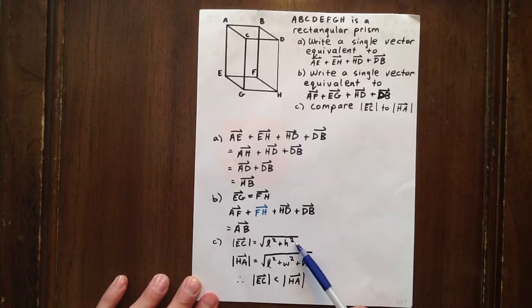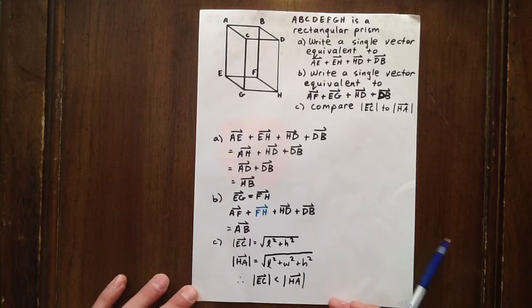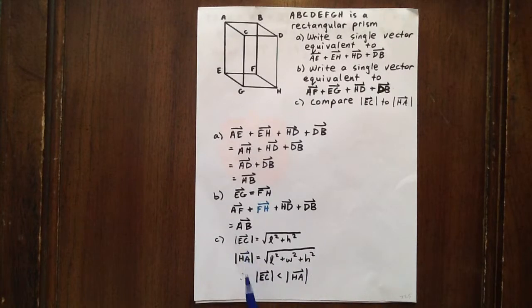And we see that the argument of the square root function here is less than it is here, which means that this number is less than this number. So the magnitude of EC is less than the magnitude of HA.